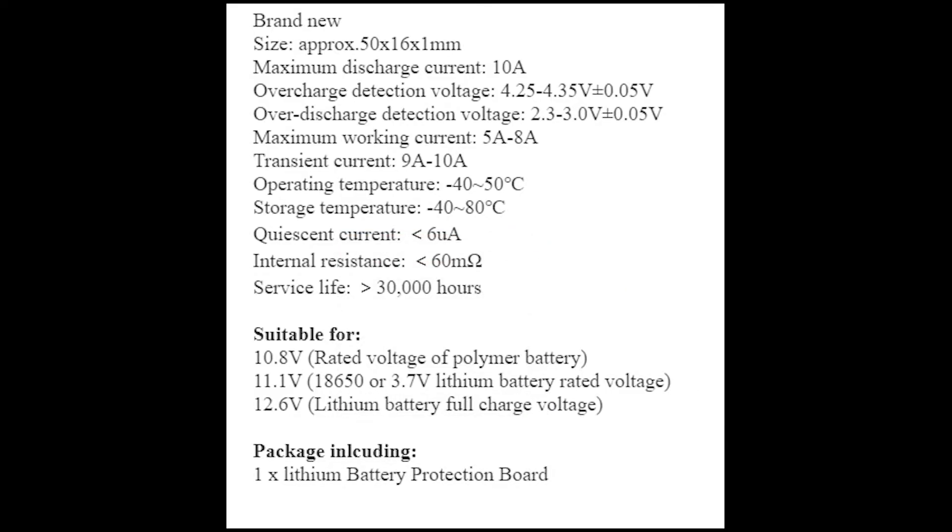you can see the dimensions there. The maximum discharge is 10 amps. The overcharge and over-discharge detection voltages are talking about the cells because the cells will go from that 3.7 volts or up and down depending on how much it's charged or how much it's discharged. As you can see down below,